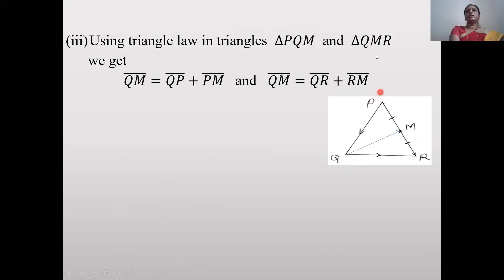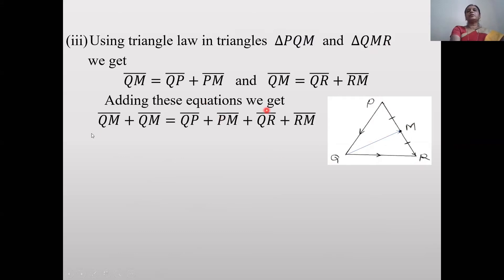Using the triangle law of addition for two triangles simultaneously: for triangle PQM, QM̄ = QP̄ + PM̄; and for triangle QRM, QM̄ = QR̄ + RM̄. Adding both equations: 2QM̄ = QP̄ + PM̄ + QR̄ + RM̄.